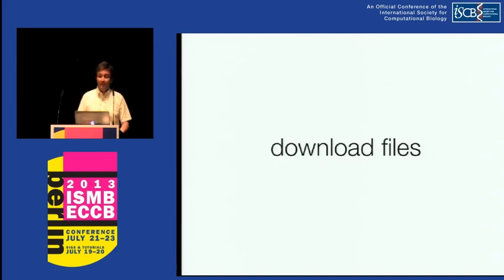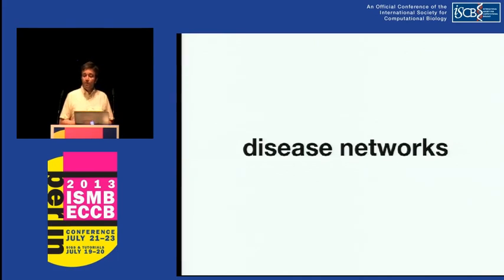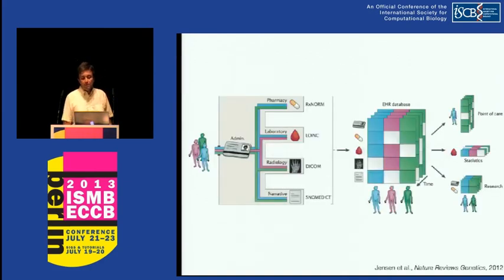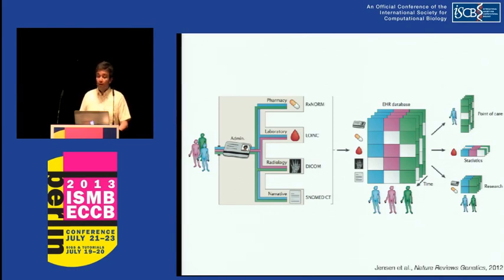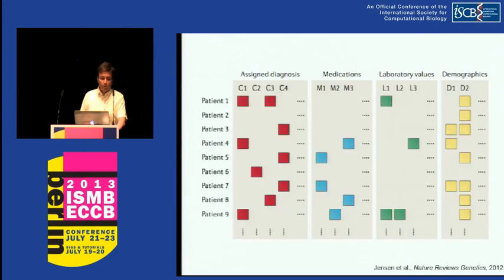Finally, the last thing I want to talk about today is disease networks, moving more towards medical informatics. What we are lucky to have access to in Denmark is very large-scale registries of electronic health records, capturing various aspects of data collected whenever you get in contact with a hospital. The kinds of things recorded include who you are, how old you are, your gender, and then depending on where you go in the hospital, there might be radiology reports, values from blood samples, diagnoses assigned by doctors, and of course also the narrative text — all the notes written by doctors and nurses. Fundamentally you can divide this into two kinds of data: structured data like assigned diagnoses, which is computer-readable, and unstructured data, the clinical narrative.